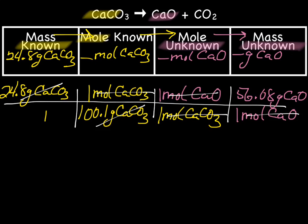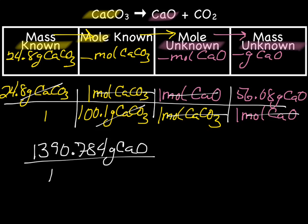And when I multiplied across the top, I came up with 1390.784 grams CaO. And multiplying across the bottom, I came up with 100.1. And then when I divide, I got 13.8939 and so forth, gram CaO.